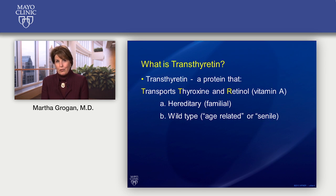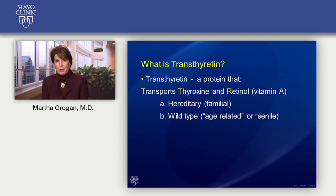So what is transthyretin? It's a long name but when you break it down it's pretty simple. It's a protein in your body that is produced by the liver, and it transports thyroxin — or thyroid hormone — and retinal binding protein. So two things that your body needs are transported through the bloodstream by this protein. You can think of it like ground transportation trucks and trains — these proteins transport substances throughout your bloodstream.